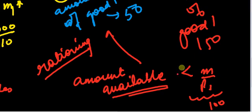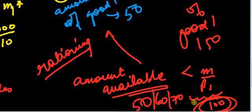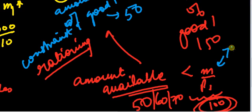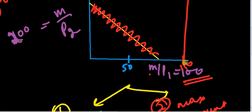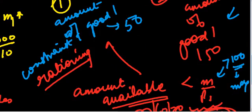If the amount available is 50, 60, or 70 — less than 100 — then I cannot consume 100 units at any cost, so this is constrained rationing. But if the amount available is more than 100 and 100 is the maximum I can consume, then it is unconstrained rationing — I am unaffected because the market availability exceeds what I can afford anyway.